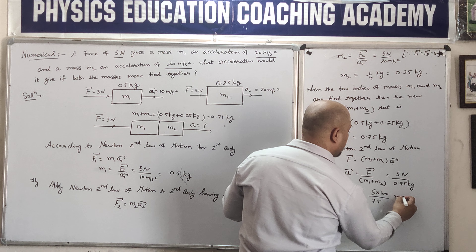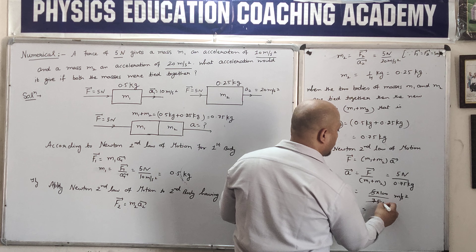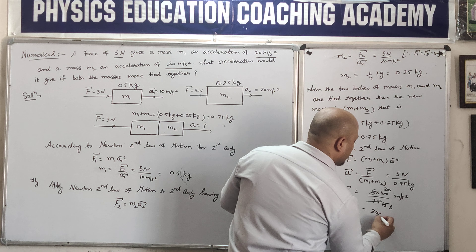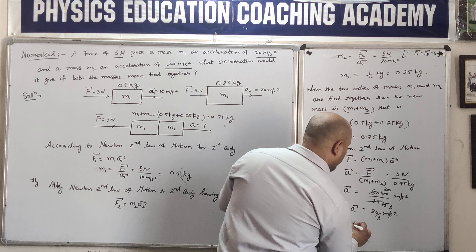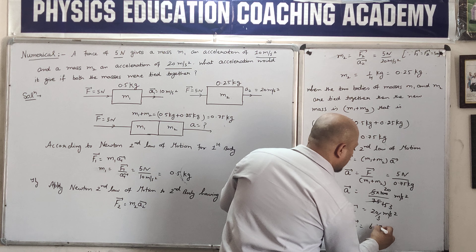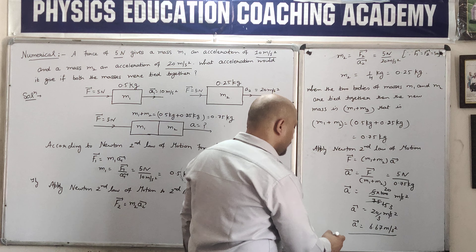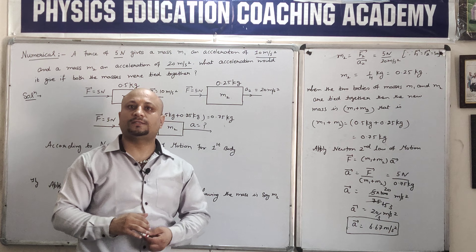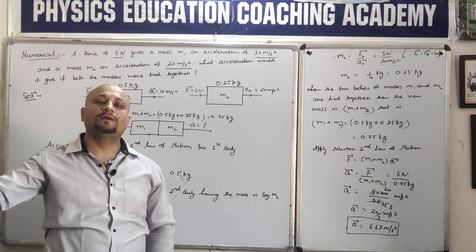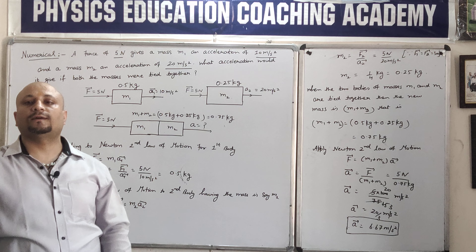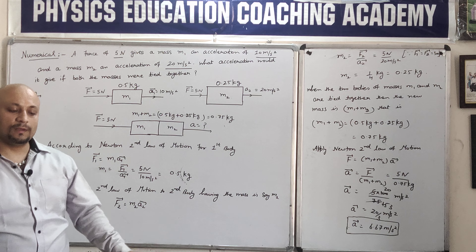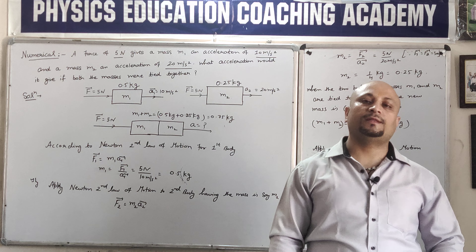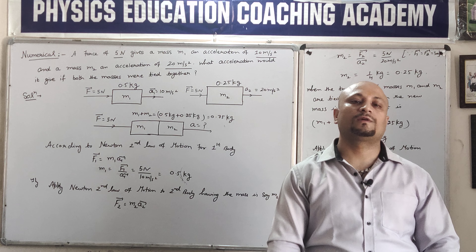So A = F/(M1+M2) = 5/0.75 = 6.67 meters per second square. This means that if two bodies are tied together and the same force of 5 Newton is applied, the acceleration produced will be 6.67 meters per second square. This was a very important numerical and the video will be shared with you soon so you can see how such numericals are solved in the exam.